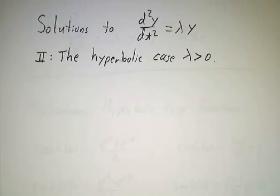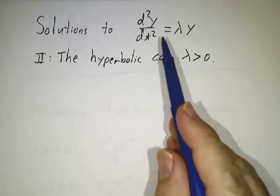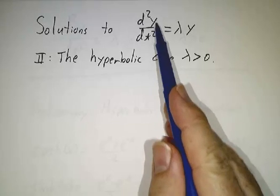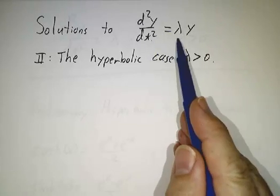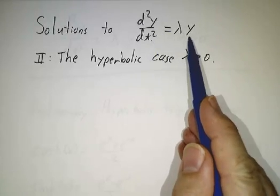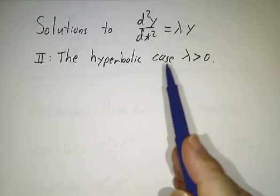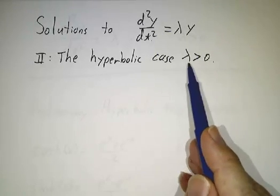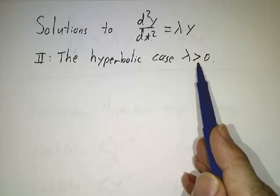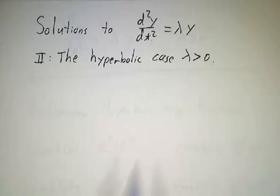In this video, we're going to finish off our study of the differential equation d²y/dt² = λy by looking at the case where λ is bigger than zero. This is called the hyperbolic case.